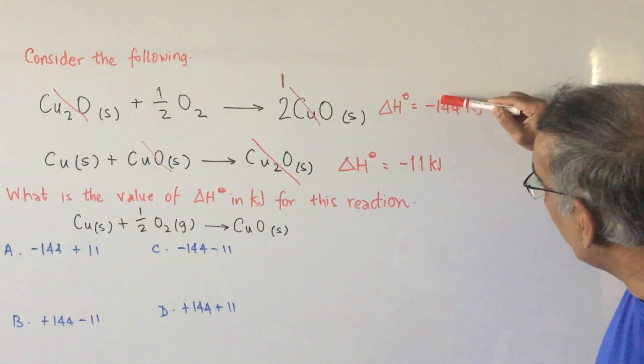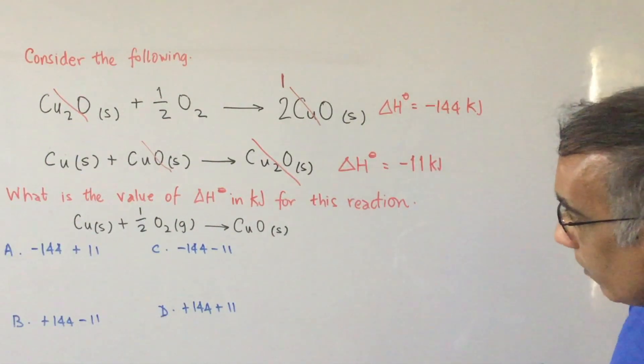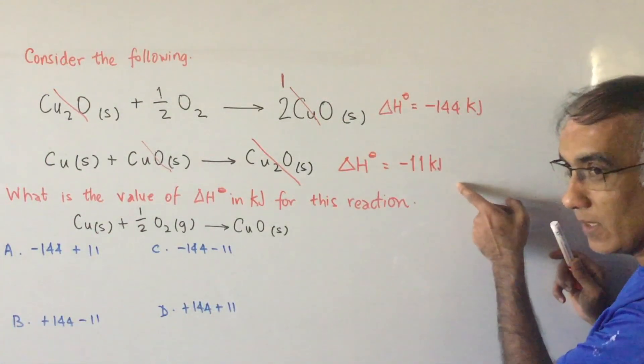we then need to take the sum of minus 144 and minus 11. And that would mean that C would be our answer, because we're actually adding this plus this.